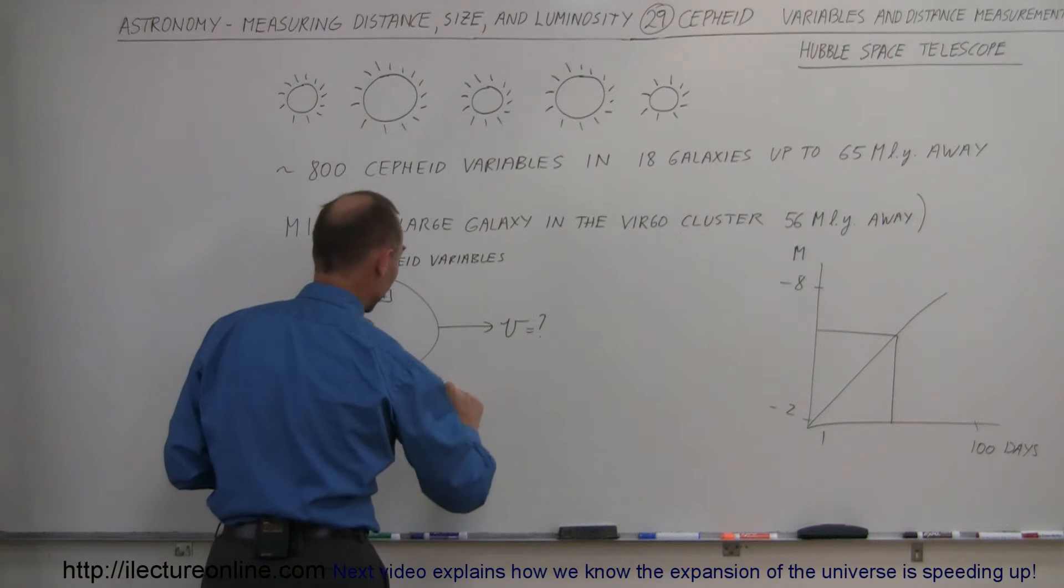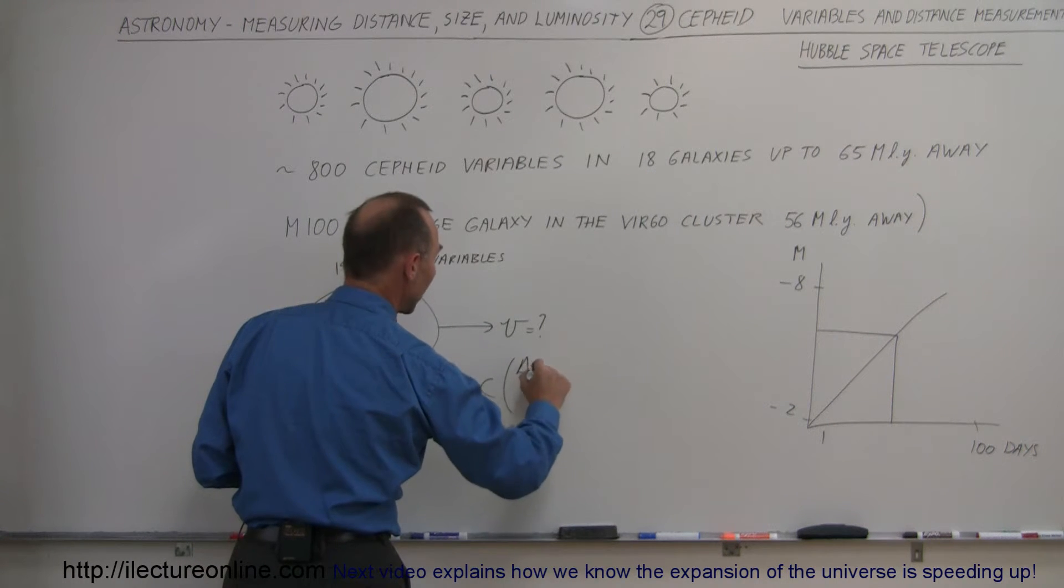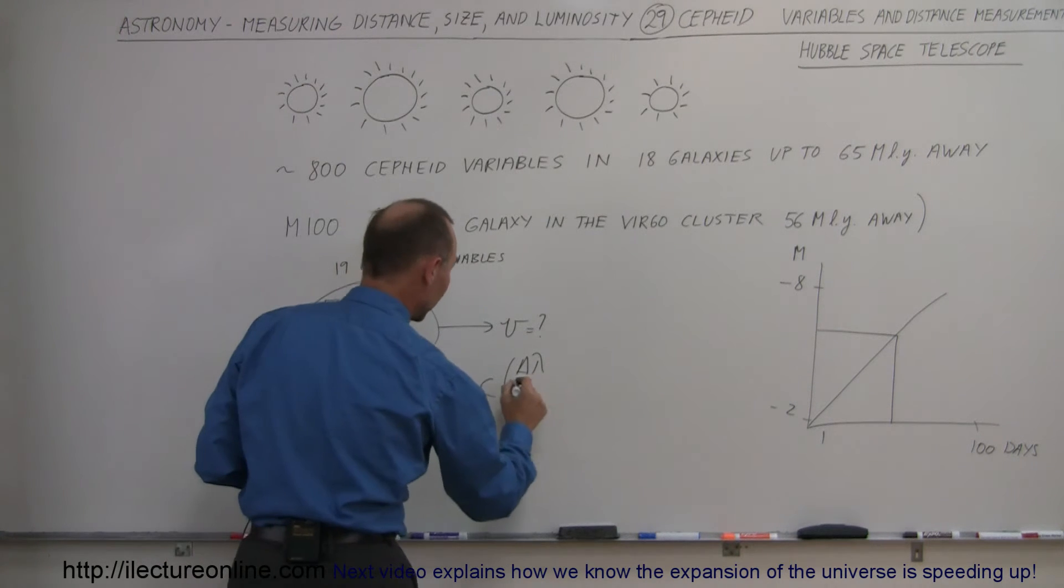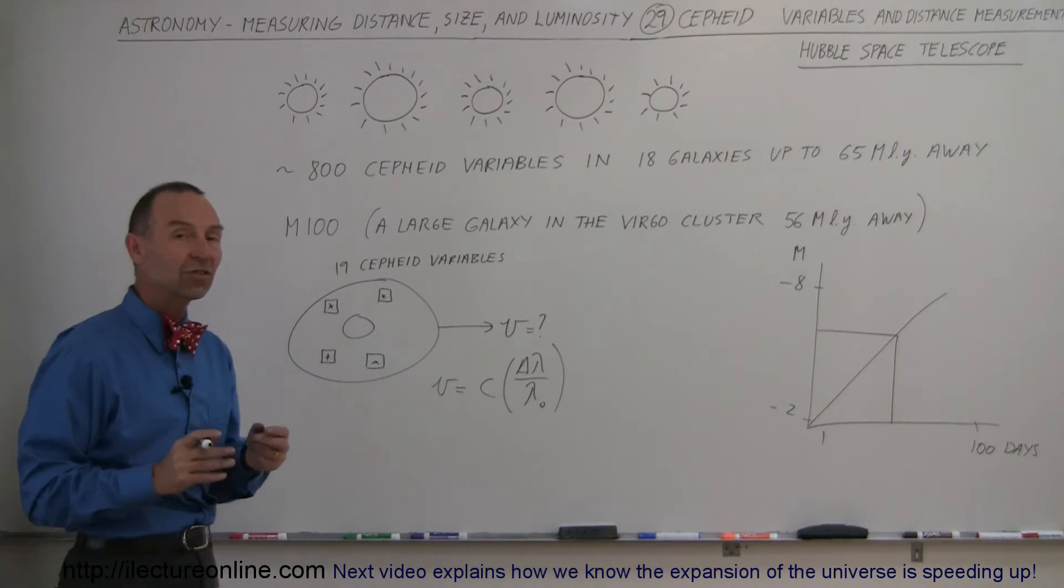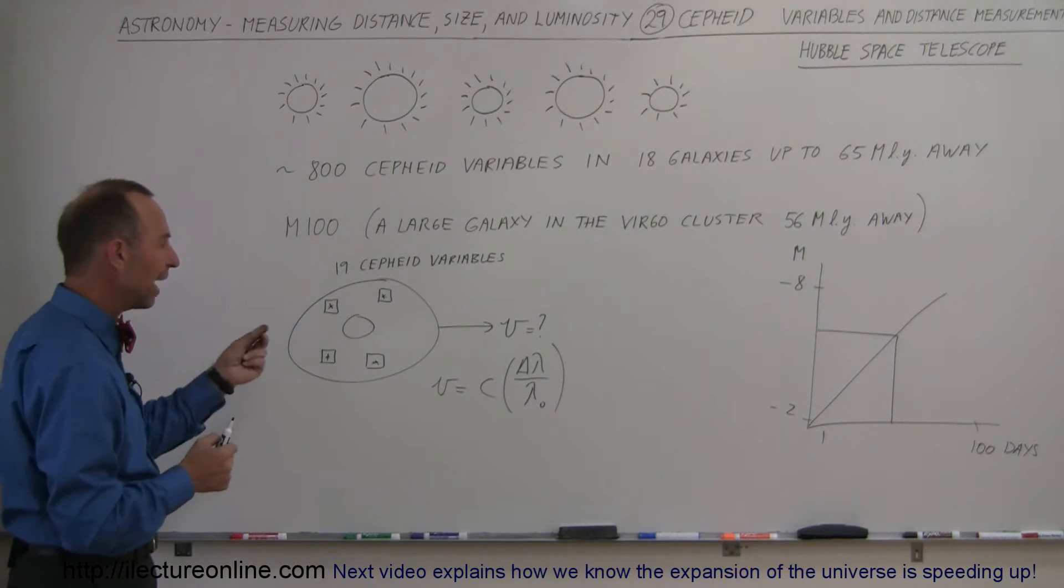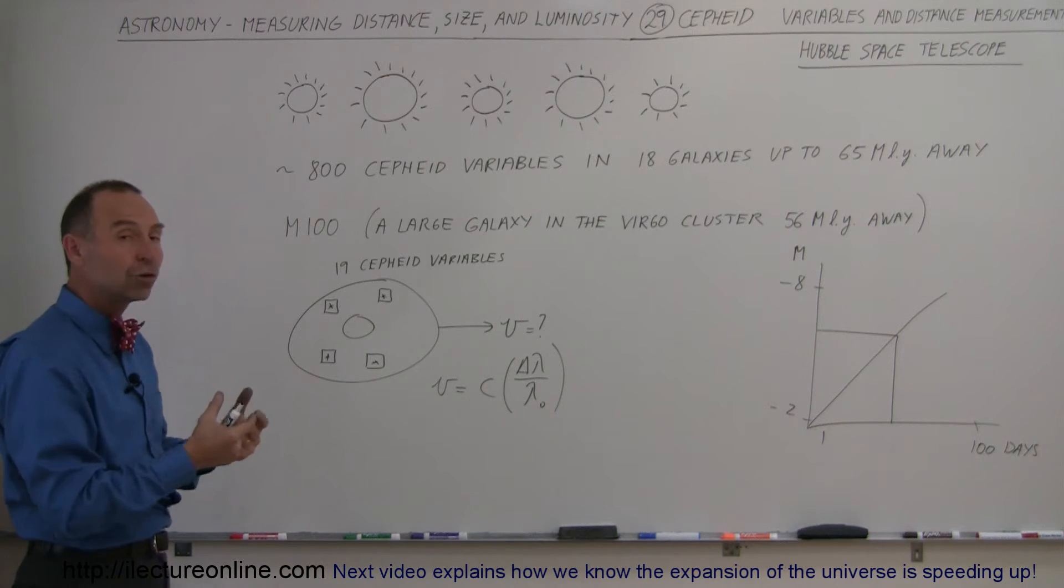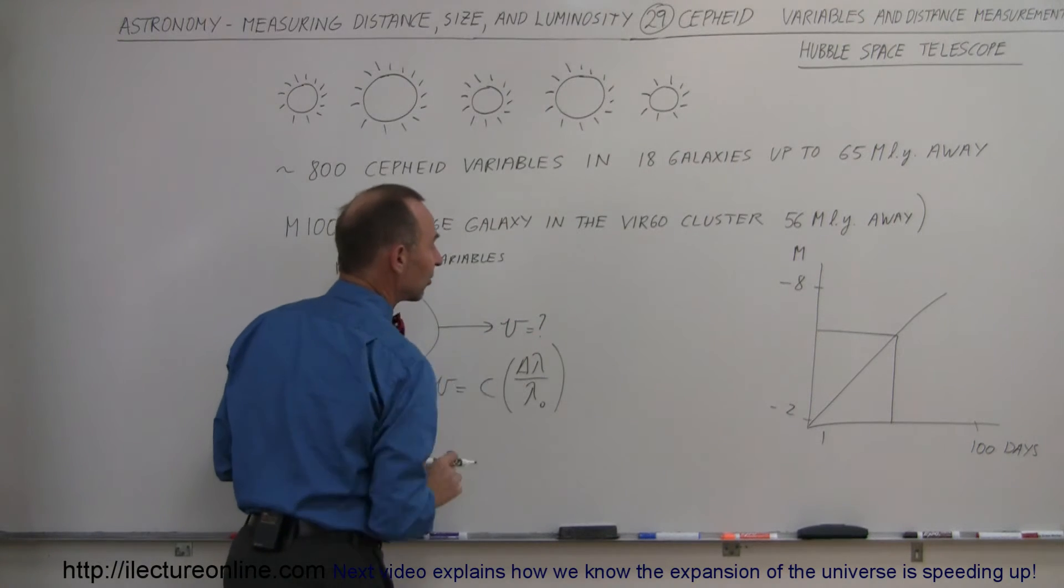How do we do that? Well, the velocity is equal to the speed of light times the change in the wavelength caused by this recessional velocity, divided by the original wavelength if the galaxy was not changing. We do that for a specific spectroscopic value of, for example, hydrogen or some other gas that we know the exact value of, and from that we can find the exact velocity.